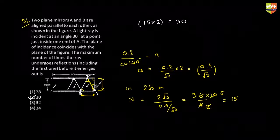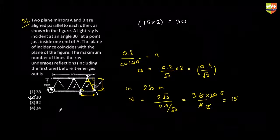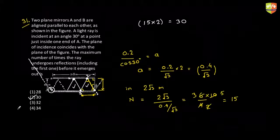Towards the end, the last triangle will be the situation where the possible reflection occurs — where it gets reflected and goes away. So the answer is actually 30 or 31, but since 31 is not in the options, option 2 is correct.